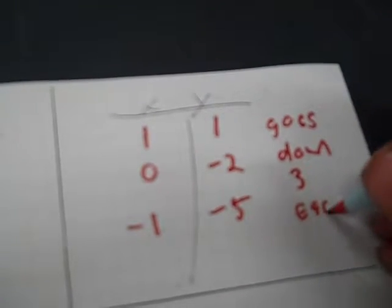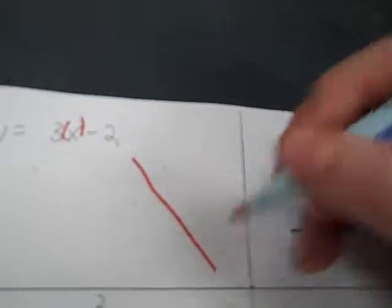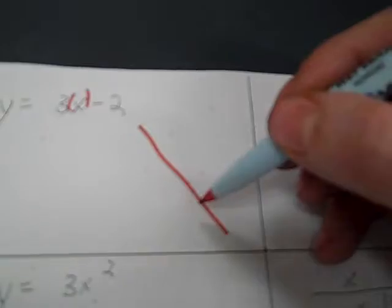It goes down 3 each time. That's what makes this a line — because each time it goes down 3, down 3, down 3. It's like a step ladder.